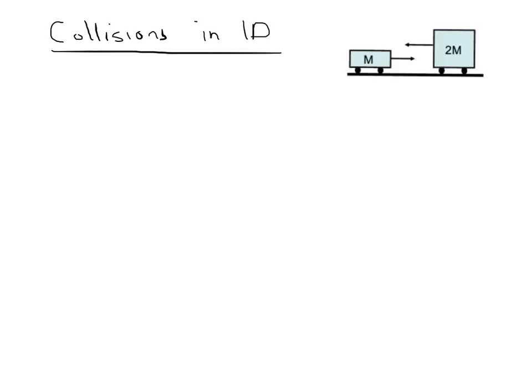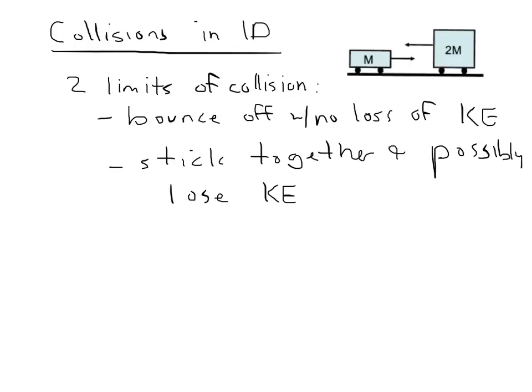Today we're going to be talking about collisions of objects in one dimension. We're going to be covering both elastic collisions and inelastic collisions, and I'll define those terms momentarily. We'll be talking about two limits of collision. There are two limits: in the first, the two objects bounce off of each other when they collide with no loss of kinetic energy. In the second, the two objects collide and stick together, possibly losing kinetic energy. These are two idealized limits; most collisions are actually somewhere in between.